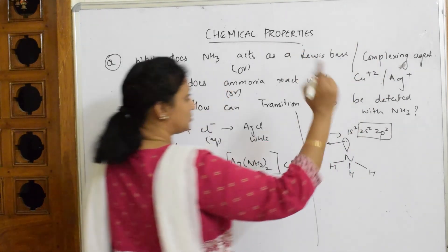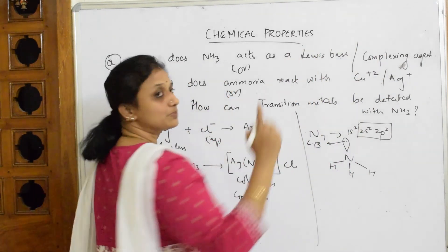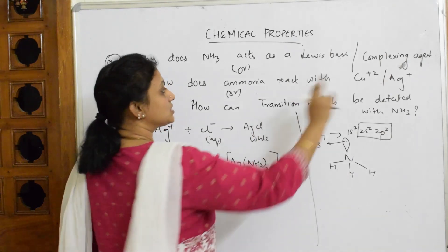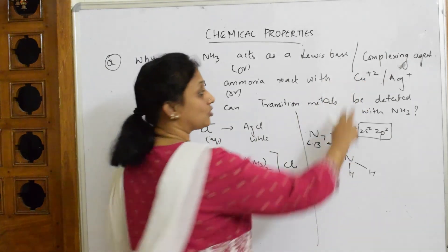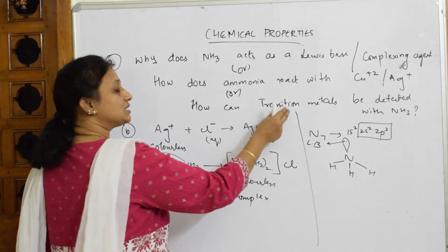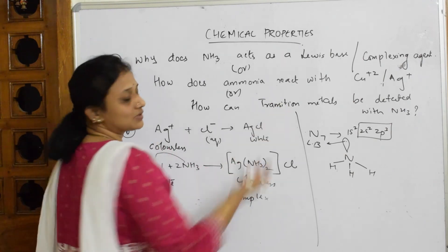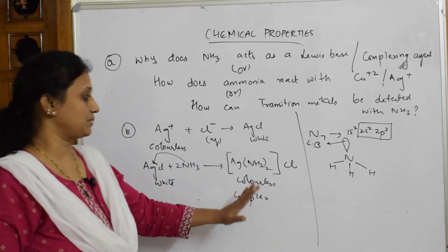This is how ammonia acts as a complexing agent and as a Lewis base. It is used to detect copper, silver, and transition metals. All three questions have the same answer — you need to write out these reactions.